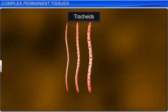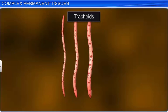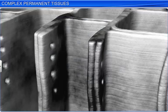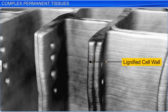Tracheids are elongated, angular, lignified cells with tapering ends. They are dead and without any protoplasm. The inner layers of the cell walls in tracheids vary in thickness.